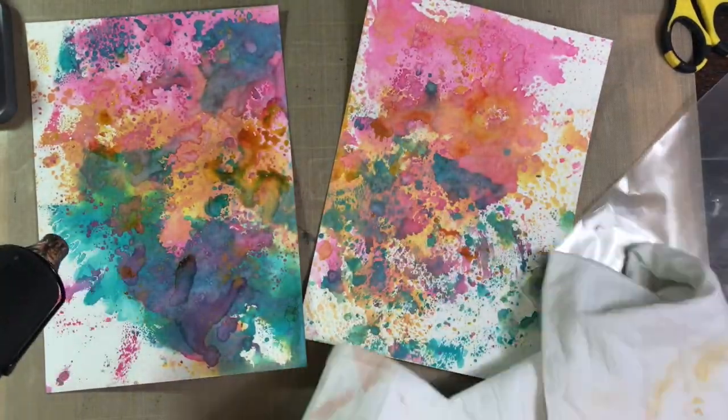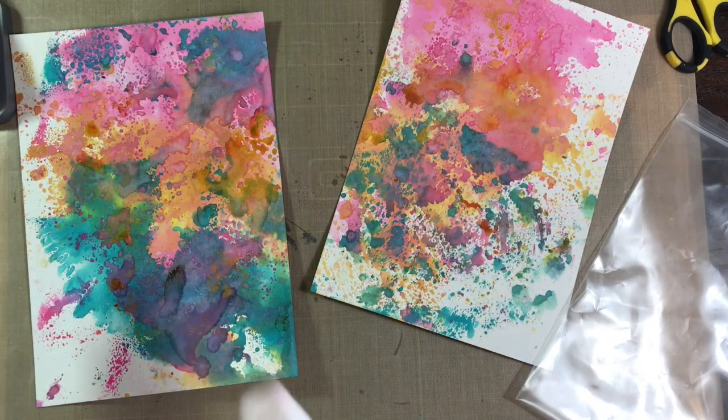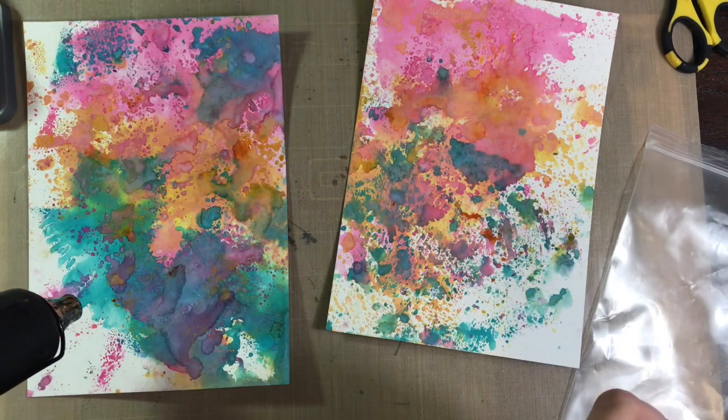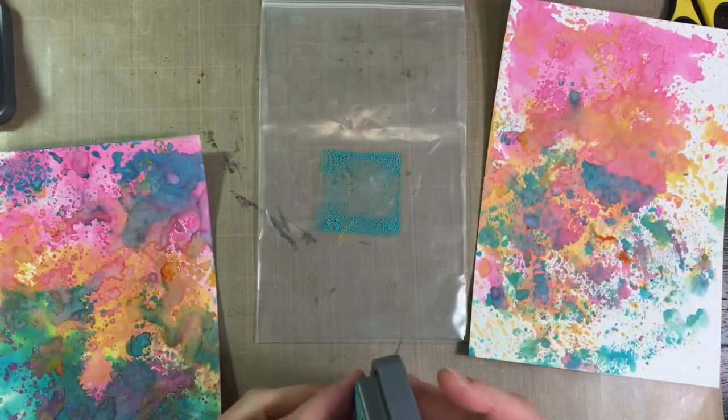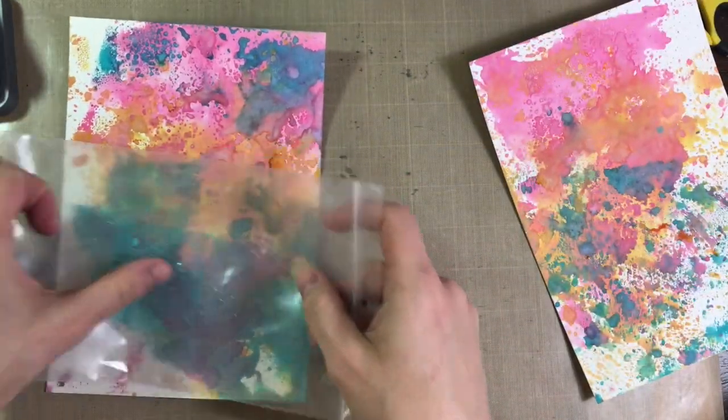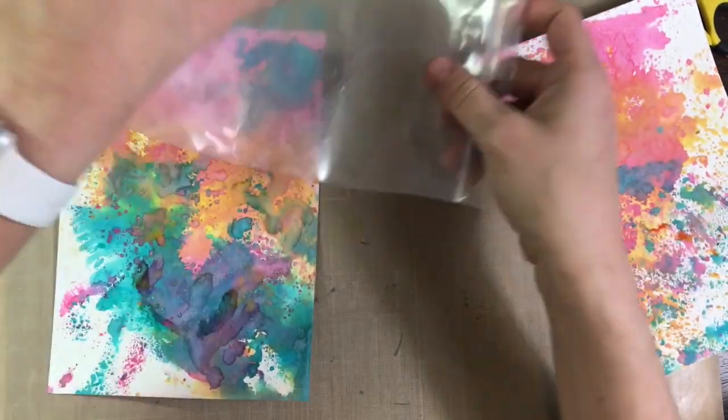You don't want to overwork it because you'll find that you'll get a little bit of mud. And you can see there I'm kind of trying to pick that up where it looks like it's getting brown before it gets too dry. But the heat gun dries it really well. And now I'll move on to the blue to add a little bit more blue where I'd like it.